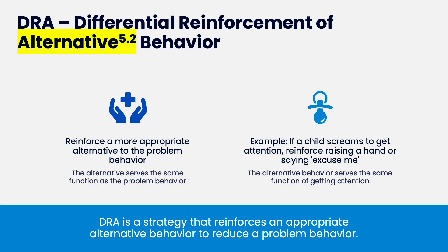The first one we're going to learn, and the most useful of all of them, is differential reinforcement of alternative behavior — DRA. To do this successfully, you need to know the function of the problem behavior. Once you know the function, you pick another behavior that serves the same function that you do want to see. You're reinforcing a more appropriate alternative to the behavior, but it must serve the same function. It doesn't have to look similar.